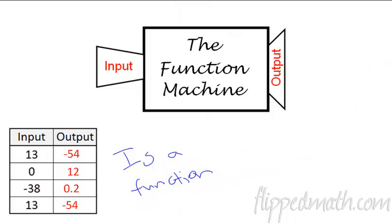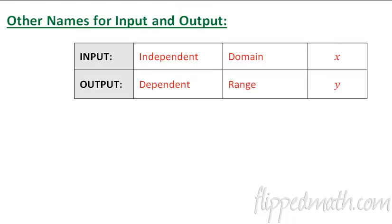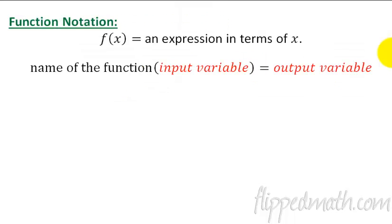That helps you know what you're doing with input and output from tables. You can also call input the independent variable — remember the I-N, I-N. The output is the dependent. The names for these are domain and range: domain is the input, range is the output. And we often use X and Y. It doesn't have to be X's and Y's — we'll have lots of different variables. D comes before R, and X comes before Y, just alphabetically, to remember their order.